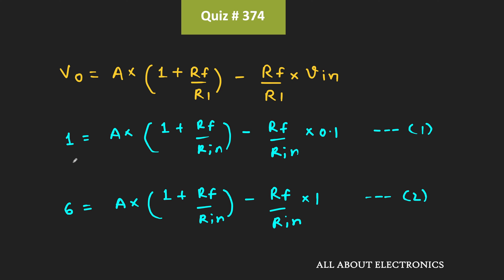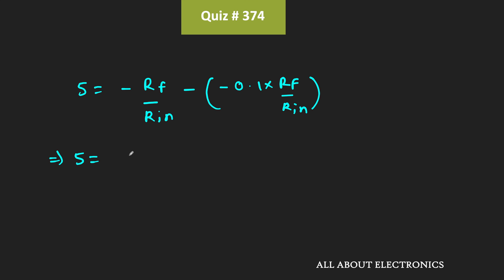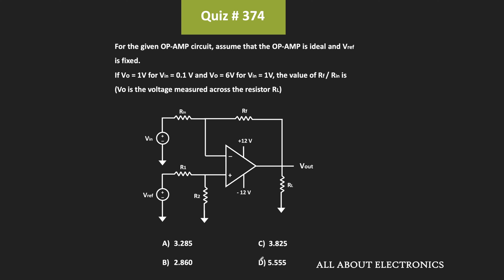Subtracting the first expression from the second, the constant term 'a' cancels out, and we have: 6 minus 1 equals 5, which equals minus (Rf divided by Rin) minus (minus 0.1 times Rf divided by Rin). This simplifies to 5 equals minus 0.9 times Rf divided by Rin, so Rf divided by Rin equals minus 5.55. Taking the magnitude, the ratio of Rf to Rin is 5.55, making option D the correct answer.